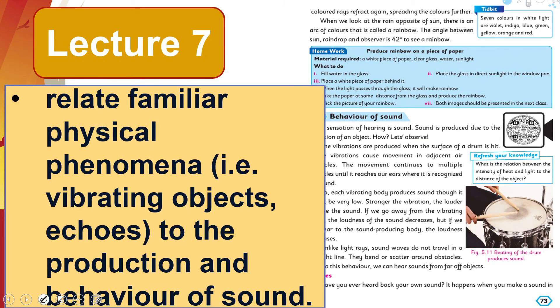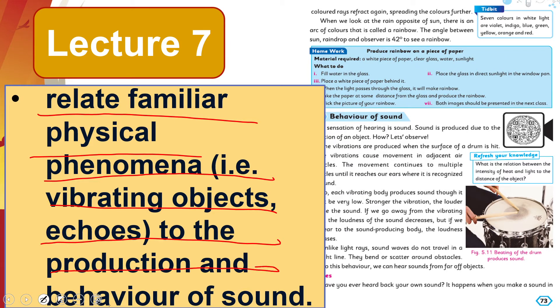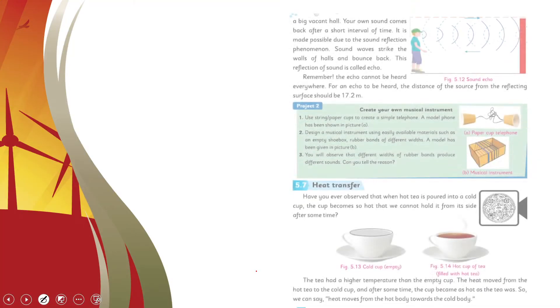In lecture number seven, students will be able to relate familiar physical phenomena—that is, vibrating objects, echoes—to the production and behavior of sound. So sound is also a form of energy, and how vibration creates sound and echoes are produced, we will discuss that in lecture number seven.